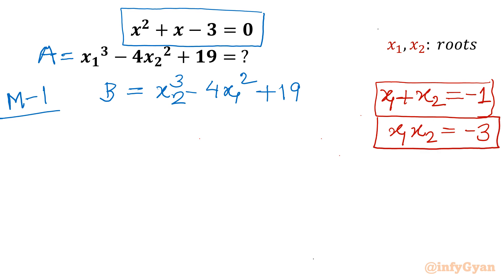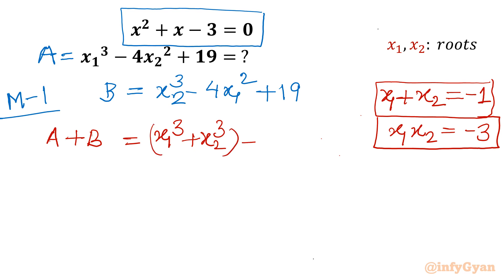Now I will calculate the value of a + b. Adding both expressions, I get x1³ + x2³, then -4 is common, so in brackets I write x1² + x2². Then 19 + 19 gives plus 38.